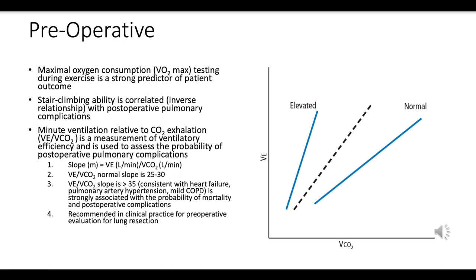Maximal oxygen consumption, or VO2 max, is the maximum rate of oxygen consumption measured during incremental exercise — a measure of an individual's aerobic fitness level. VO2 max testing during exercise is a robust predictor of patient outcomes following surgery. A higher VO2 max suggests better cardiovascular fitness and a potentially lower risk of postoperative complications.